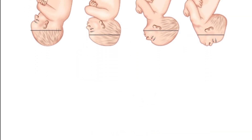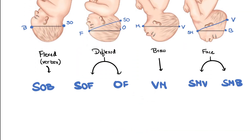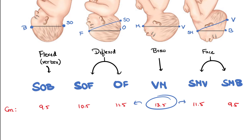Let's summarize. These are various cephalic presentations, their diameters, and respective values in centimeters. As mentioned before, verticomental has the largest diameter of 13.5 cm. Either side of it is 11.5 cm, at the extremes it is 9.5 cm, and the remaining is 10.5 cm for suboccipitofrontal. We can remember this way: from complete flexion to full extension.